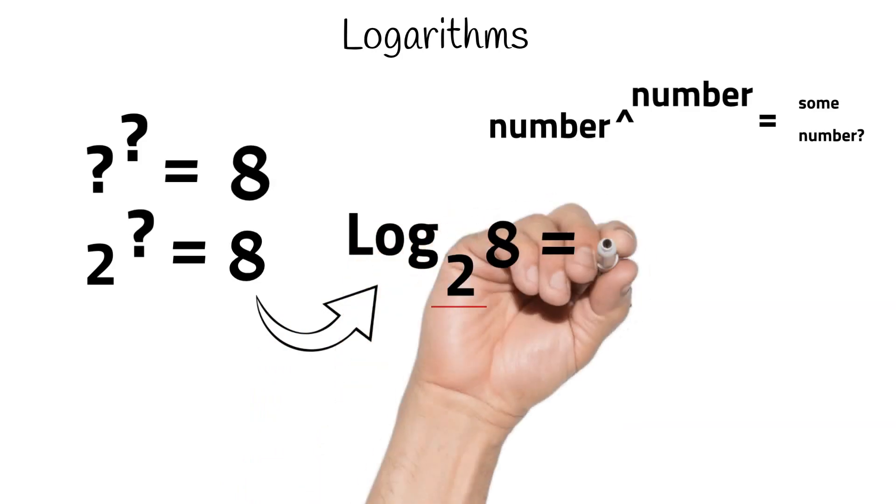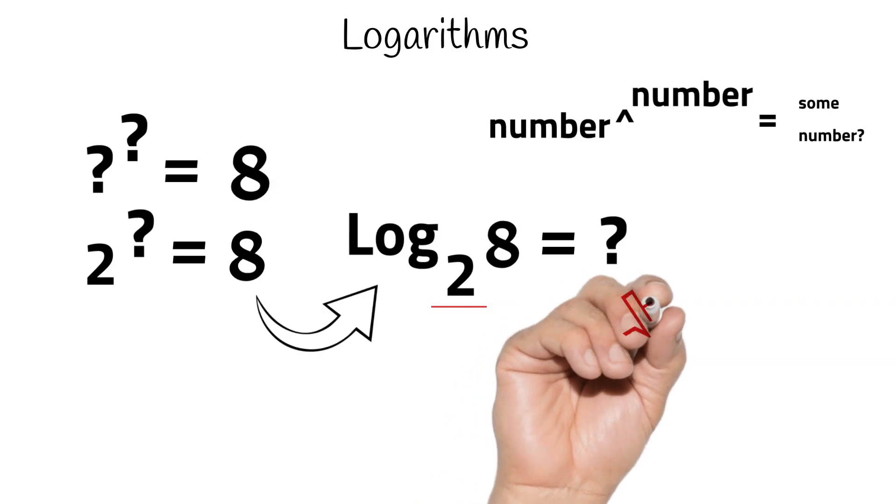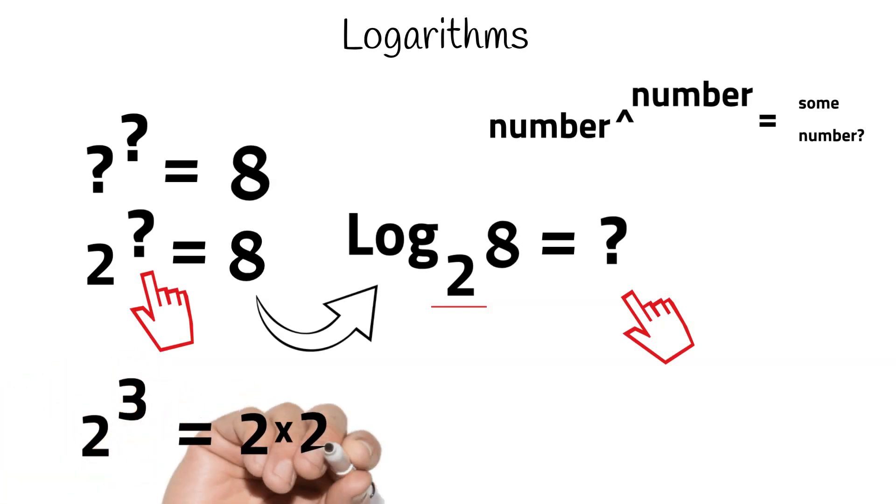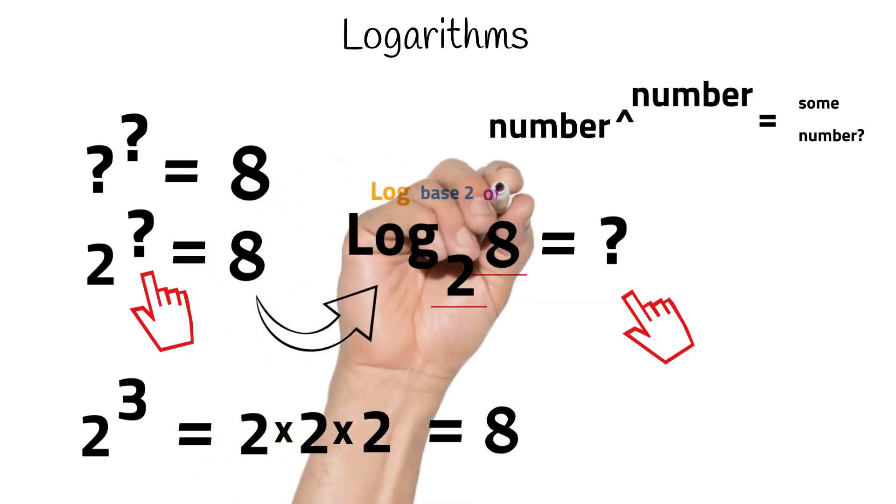And let's not forget that in computer science, the base is always 2. So to find the answer to this, we just need to find the answer to this. With that in mind, we can see that if we raise 2 to the power of 3, we get the number that we are looking for, 8. So log base 2 of 8 is 3.